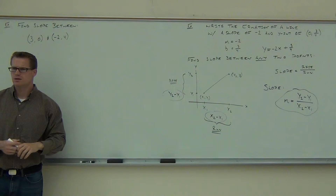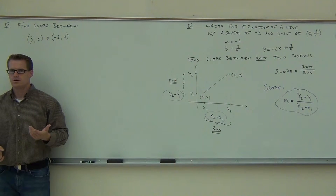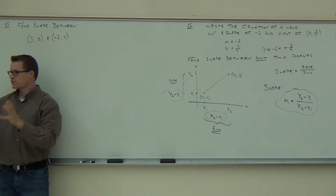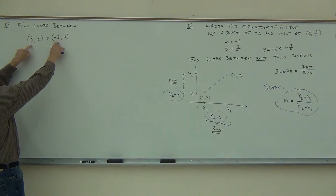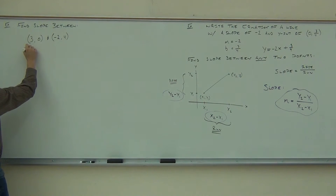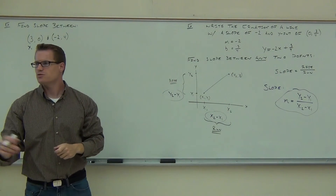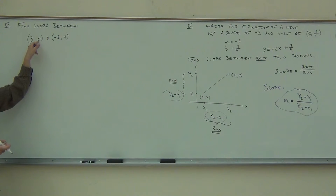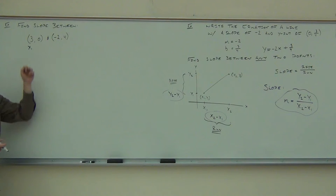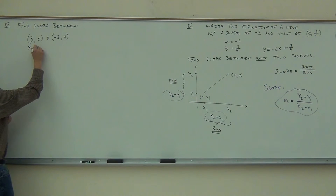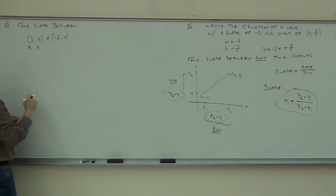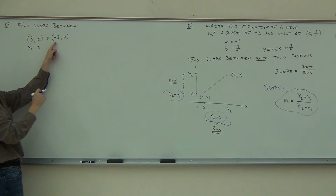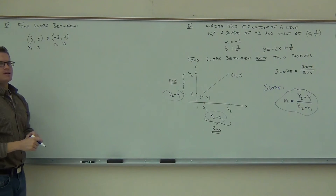I'm going to go ahead and pick which one is x1. You have to pick an x value for x1 — either point works. I like to go in order, so once you pick x1, everything else falls into place. If this is x1, then the y-coordinate of that same point must be y1 — ones go together, twos go together. You can't go x1, y2 — that doesn't make sense. So x1 and y1 are from the first point, and x2, y2 are from the second.